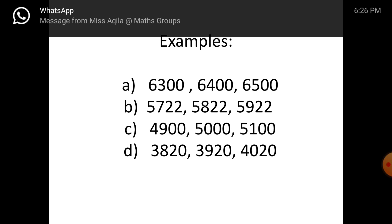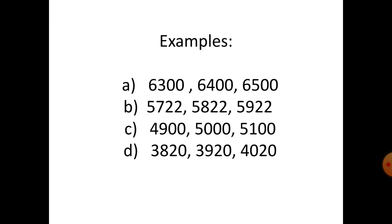Continuing: five thousand nine hundred and twenty-two. Number C: four thousand nine hundred — plus one hundred — five thousand — plus one hundred — five thousand one hundred. Number D: three thousand eight hundred and twenty — three thousand nine hundred and twenty.